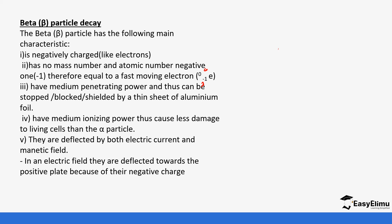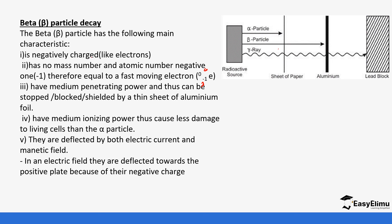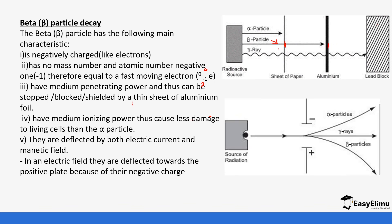In an electric field, the beta particle is deflected towards the positive plate because it is negatively charged. As you can see from the setup, it passes through the paper but is stopped by the aluminium, and on the electric field it is deflected on the positive plate because it is negatively charged.